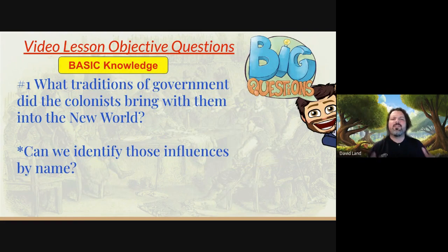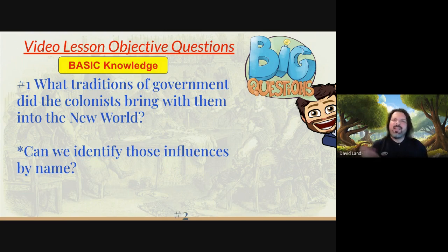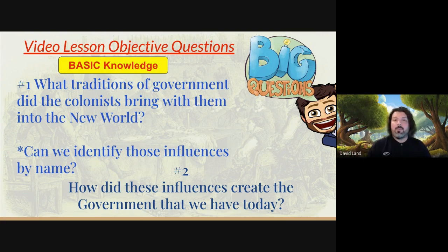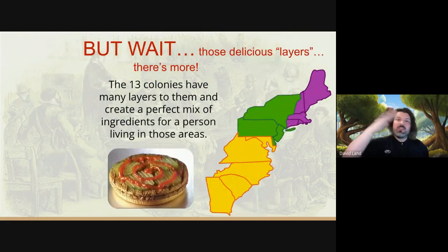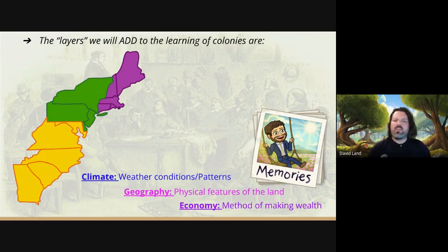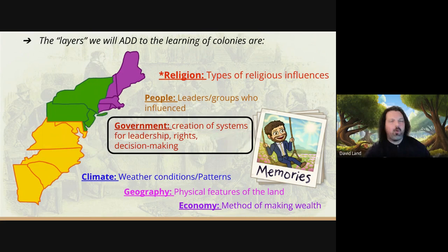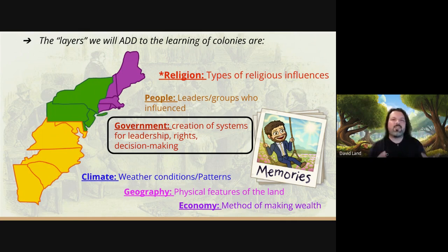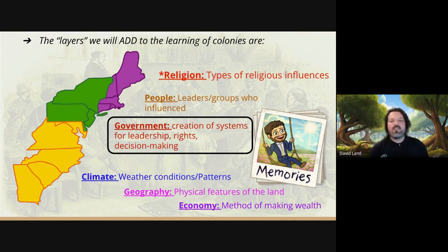The questions: what traditions of government did colonists bring with them to the new world? Can we identify them — can we actually name those influences of government? And how did these influences create American government today in 2022? There's a whole trail of government stories that'll help us find out. So the layers of the colonies — Mr. Lance is going to add the last layer. You've watched the video series and know the colonies are built on layers. We've covered climate, geography, economy, religion and people. But last is the government topic, which is complicated and complex but awesomely simple — that's what we're studying today. Government: creations of systems for leadership, rights, and decision-making.